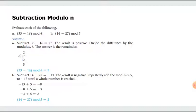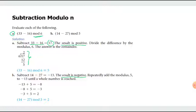In Case A, we subtract 33 minus 16 to get 17 — a positive result. When you get a positive result, you do the same as in addition: divide by the modulus. Since we are working in modulo 6 arithmetic, we divide 17 by 6. We get a remainder of 5. So our answer is 5.